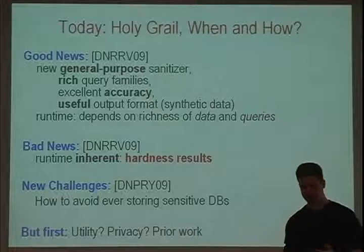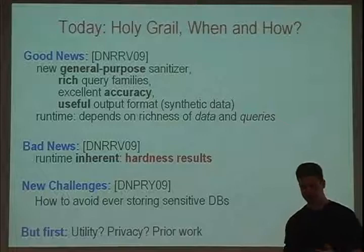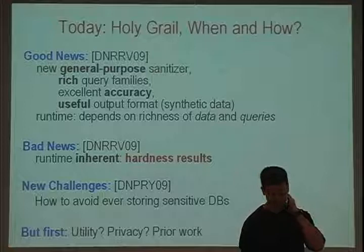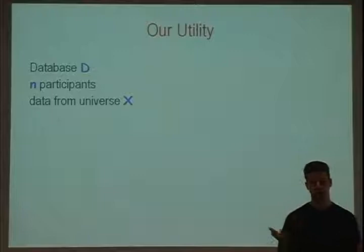But first, before going into new results: what do I mean by rich families of queries? What's the notion of utility I'm after? And a more interesting question — what do I mean by privacy? What's the notion of privacy I'm after? And what was known before? So the model today is that we have a large database with information about n participants, and every individual participant's information is drawn from some large data universe X.